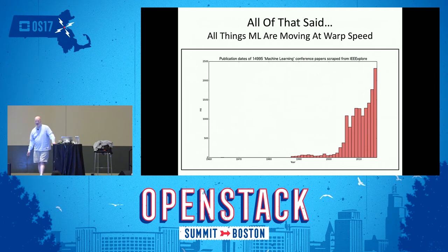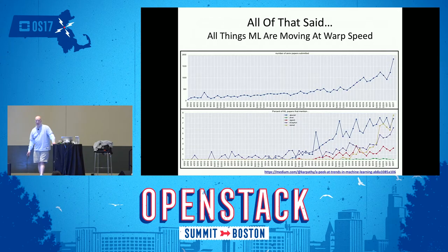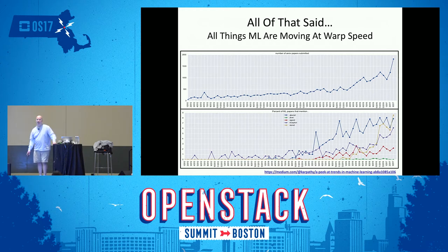Things are going unbelievably fast in machine learning. I was around at the beginning of the Internet in the late 80s and early 90s, and this is way faster. We're behind in networking — I'll explain why in a second. These are graphs about the number of papers published in conferences and the number of papers referring to different kinds of models — they're all up and to the right.